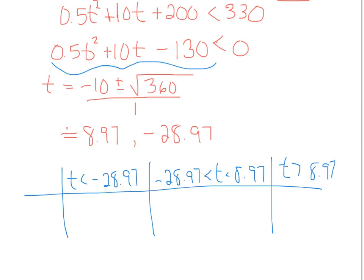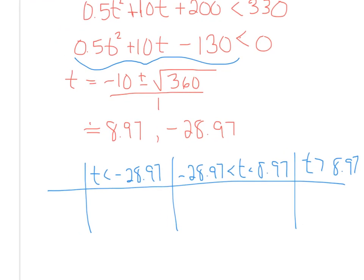And when t is greater than 8.97. Okay, now over here at the left, we really just have the function. We really just have our f of x. So since it didn't factor, there's not much else we can do here. So what we have is we have our 0.5t squared plus 10t minus 130. I can't seem to get that to write. 130. It should be like that.